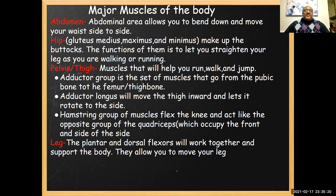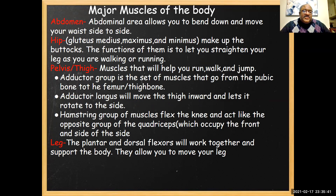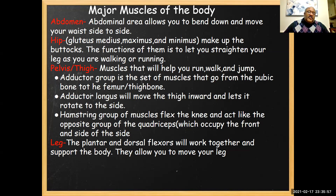The abdomen — another way of saying it is your belly — covers your waist side to side. Your hip, gluteus maximus and medius — otherwise known as your buttocks — let you straighten your leg when walking and running. The pelvis and thigh muscles help you run, walk, and jump. The adductor group is a set of muscles that go from the pubic bone down the femur or thigh bone, and they move the thigh inward and allow rotation to the side.